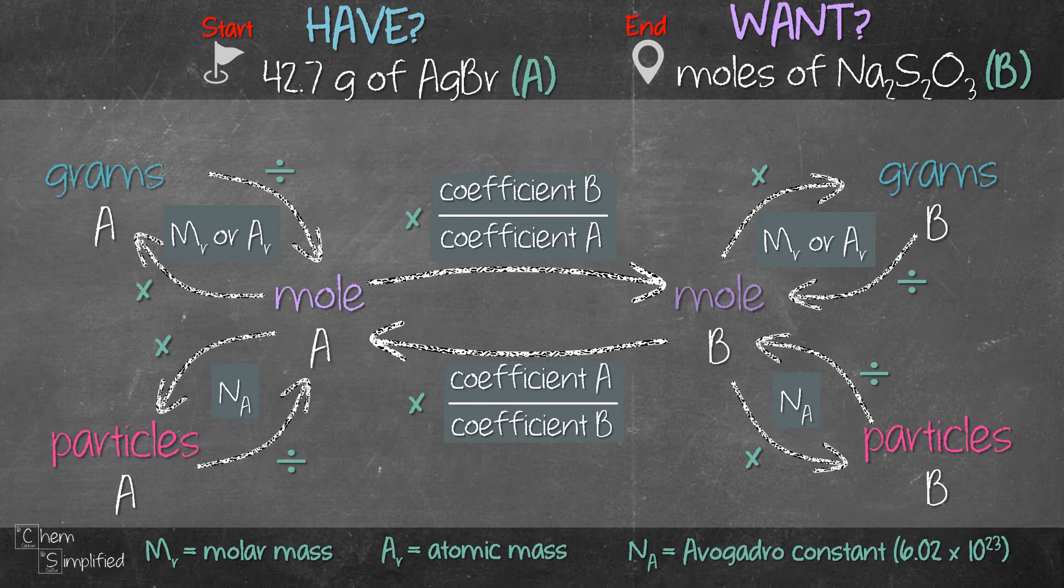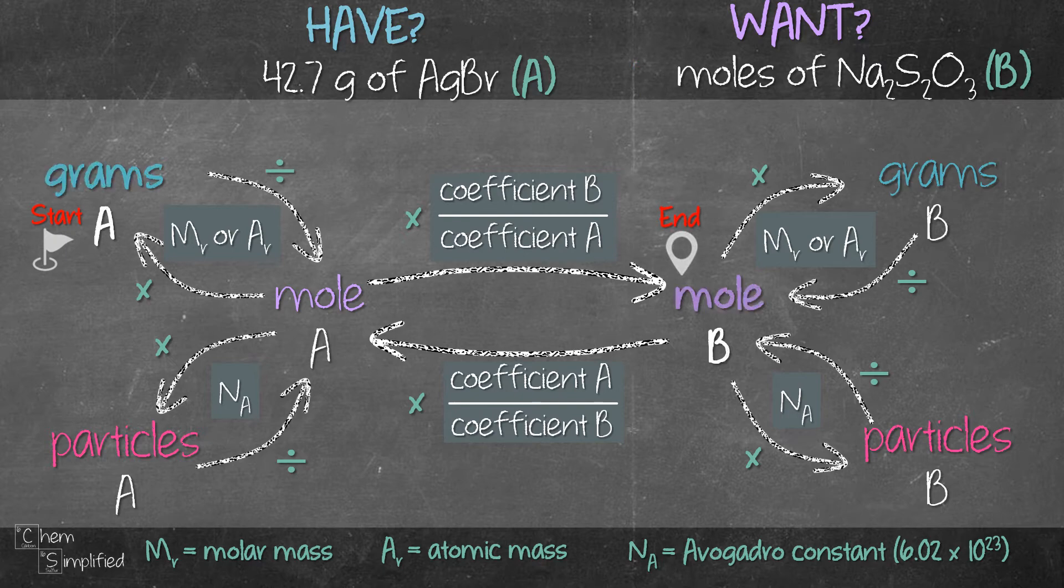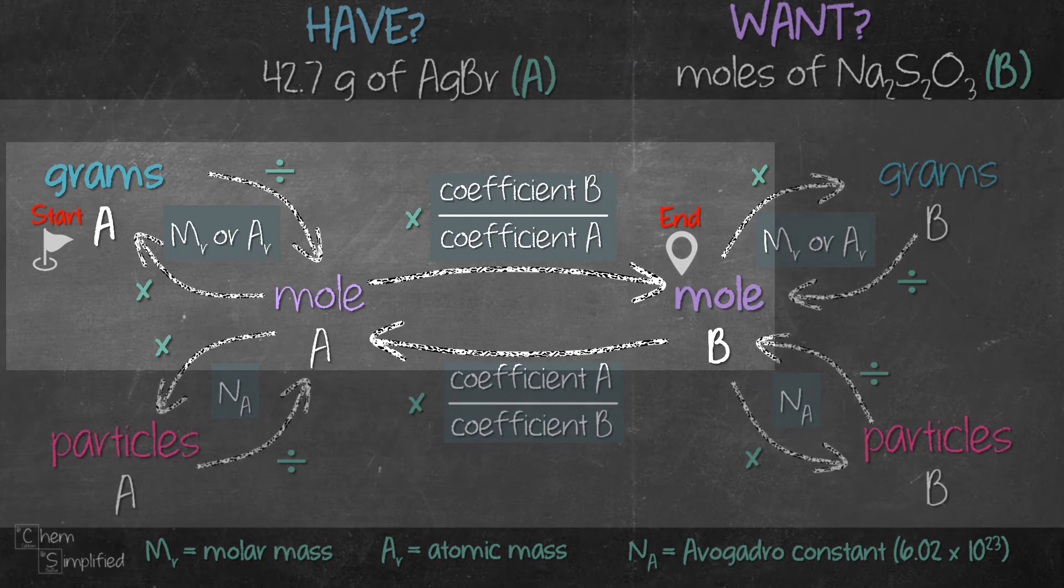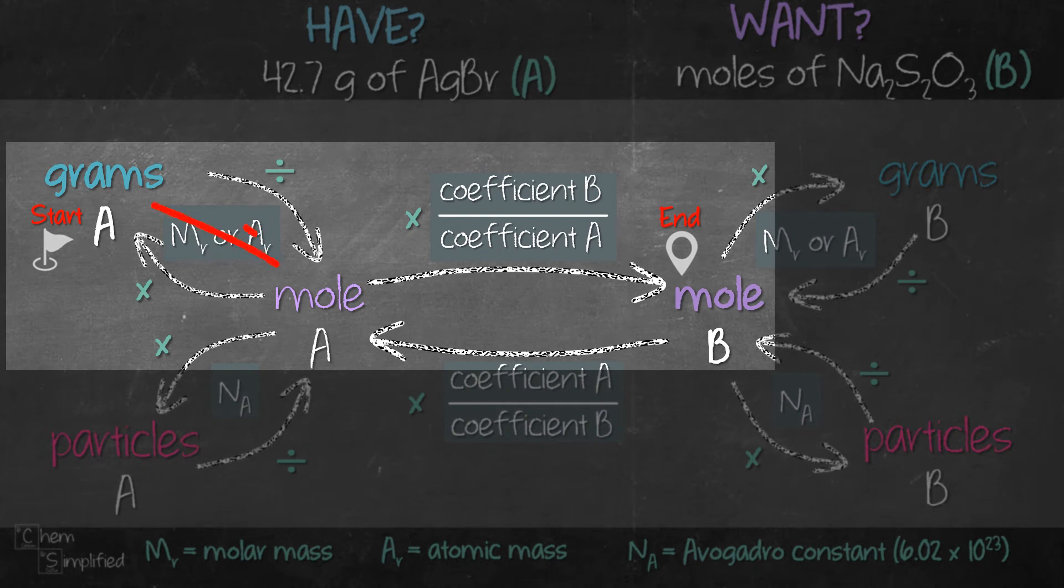Next we'll tag our start and end point on our stoichiometry plan. So our start point is grams A and end point is moles B. Looking at the plan it will take two steps to go from grams A to moles B.